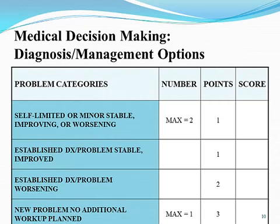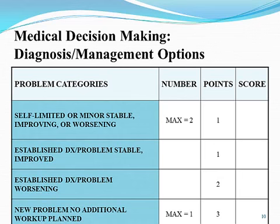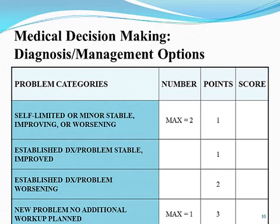Let's break down each section of medical decision-making. The first area is diagnosis management options, which is associated with the assessment portion of your SOAP note. It is what has been addressed in that documentation — what you are managing. It's not just a list of diagnoses; it's not 'history of, et cetera.' Those would be actual past histories under the history component. It should be things you're actually addressing or managing.